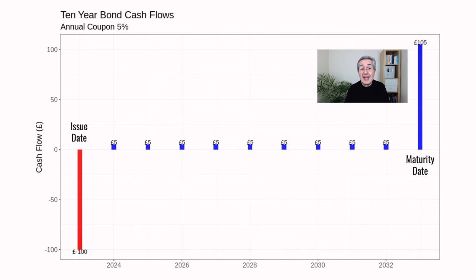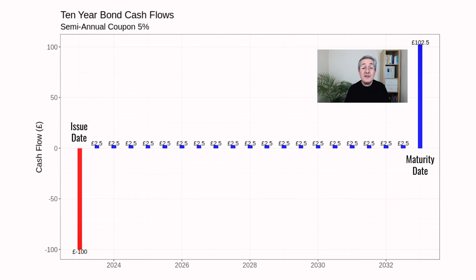The convention for UK gilts is not to receive one £5 payment per year. Instead, you get a semi-annual coupon — so rather than £5 a year, you receive £2.50 every six months. You get the same income, just more frequent payments. Don't be confused by the fact that the coupon is 5% but your payments look like they're 2.5% — that's just the convention for UK government bonds.